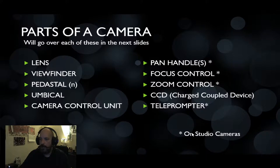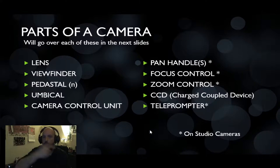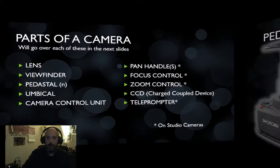The things that are actually on the physical camera are going to be the pan handles, the focus, the zoom, the CCD, and the teleprompter. All the other things, like iris control, are going to be done through the CCU back in the production booth.